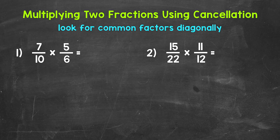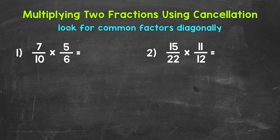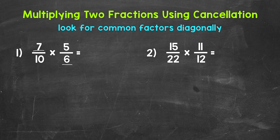Let's jump into our examples, starting with number 1, where we have 7 tenths times 5 sixths. When we use cancellation, we need to look to simplify the problem before we multiply. Look for common factors other than 1 diagonally. Let's look at 7 and 6 first. Are there any common factors between 7 and 6 other than 1? No, the only common factor is 1, so we can't use cancellation with the 7 and the 6.